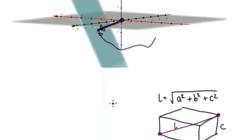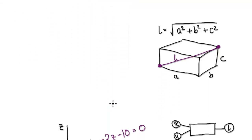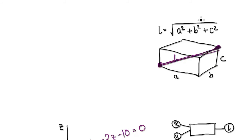I'm expecting you to already know this. If you have A, B, and C, then the distance from one end to the other — the diagonal distance — would be given by the 3D Pythagorean formula. I'm expecting you to already know this.